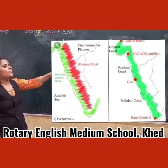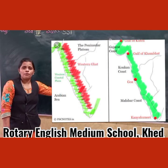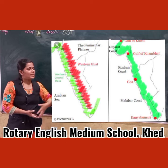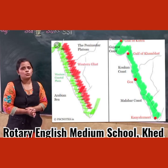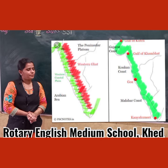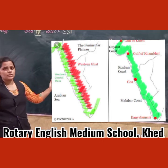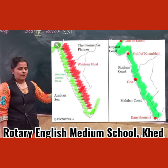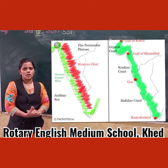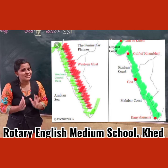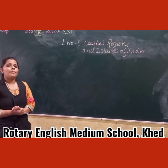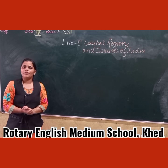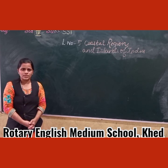The width of the Western Coastal Plain decreases from north to south. It is divided into three important parts: the Gujarat Coast in the north, the Konkan Coast in the middle, and the Malabar Coast in the south. Now, what you have to do is read the textbook and underline the new words. Thank you.